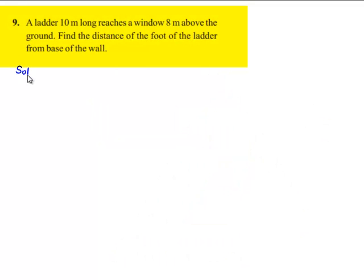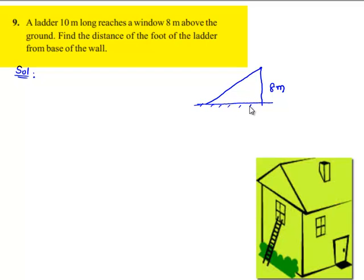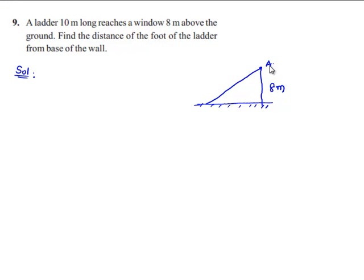Now moving on to the solution. The ladder is 10 meters long and reaches the window 8 meters above the ground. Let us assume this is the ground and here is window A, 8 meters from the ground level. The length of the ladder AB is 10 meters.